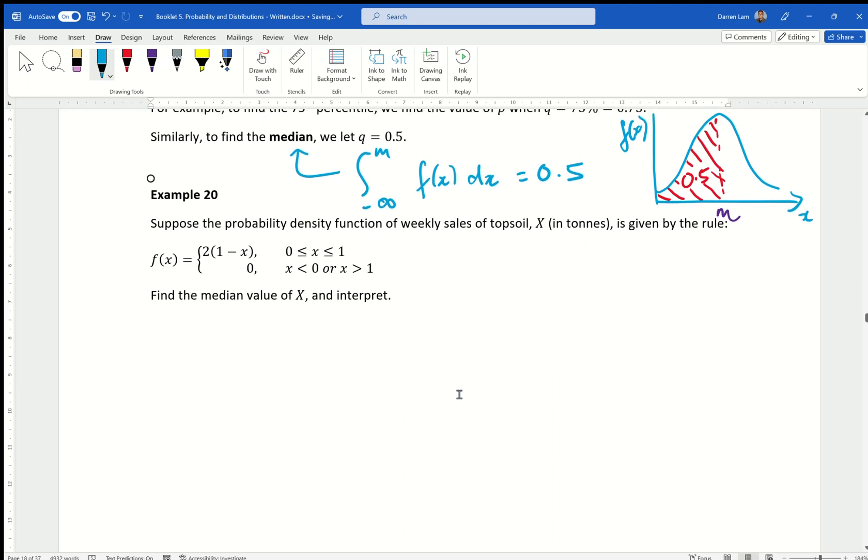Suppose the probability density function of weekly sales of topsoil, x in tons, is given by the rule f of x equals to, and for just the top, two brackets, one minus x brackets, from 0 to 1, and everywhere else, 0. Find the median value of x and interpret. So essentially, we're looking for the probability of x being less than or equal to m being 0.5.